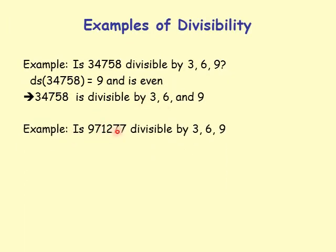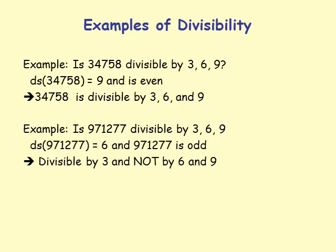Another example: is 971277 divisible by 3, 6, and 9? Its digit sum is 6 and the number is odd. That means it is divisible by 3 only — not by 6 or 9.